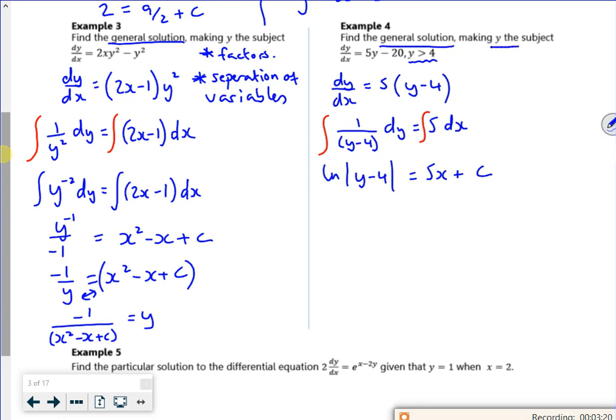Now I want a general solution making y the subject. So I've got a general solution, but I need to make y the subject. So I'm going to get rid of ln. So I've got y minus 4 is e to the power 5x plus c. Let's have a double check. Okay. Now then, here's a little bit that's a little bit messy. But e to the 5x plus c is the same as e to the 5x times by e to the c.